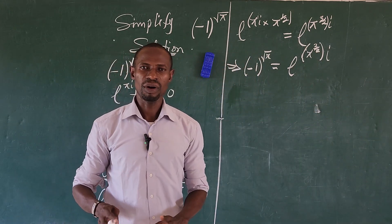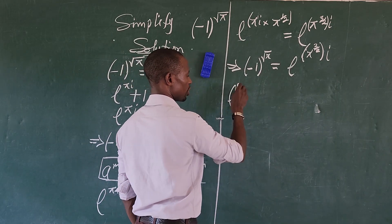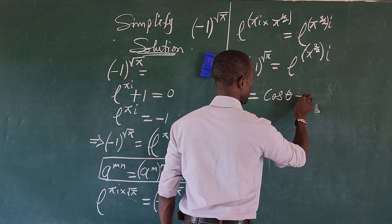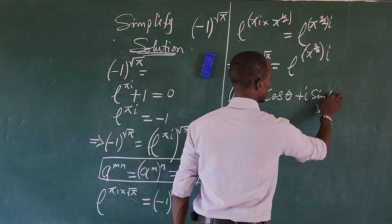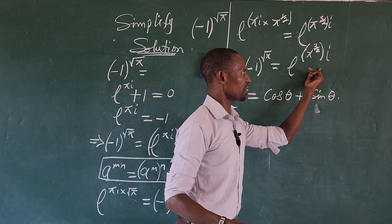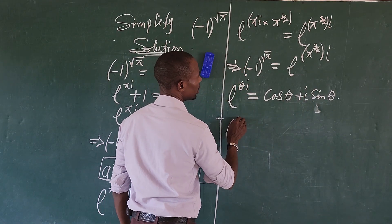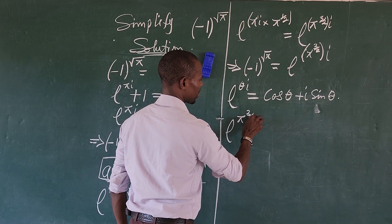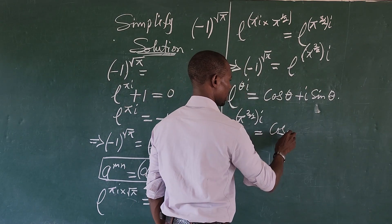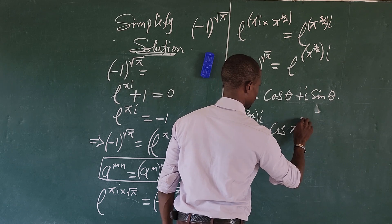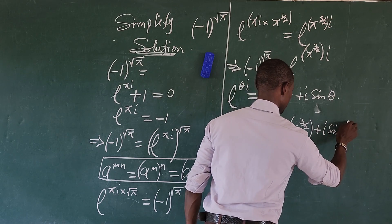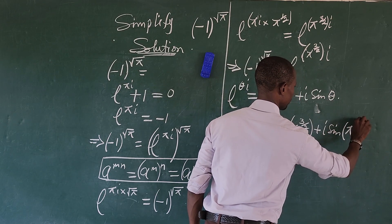We recall Euler's formula, which says e to the power of theta·i equals cosine theta plus i·sine theta. Applying this to our expression, e to the power of (pi^(3/2))·i equals cosine of pi to the power of three over two, plus i times sine of pi to the power of three over two.